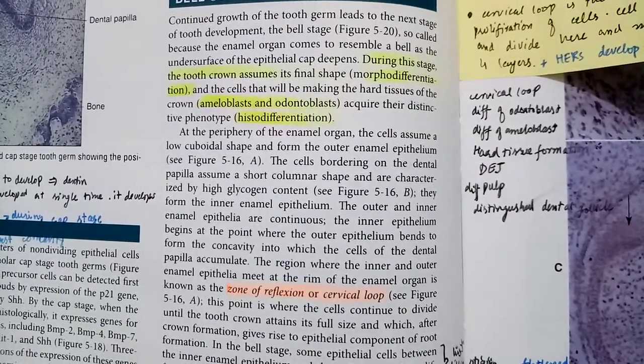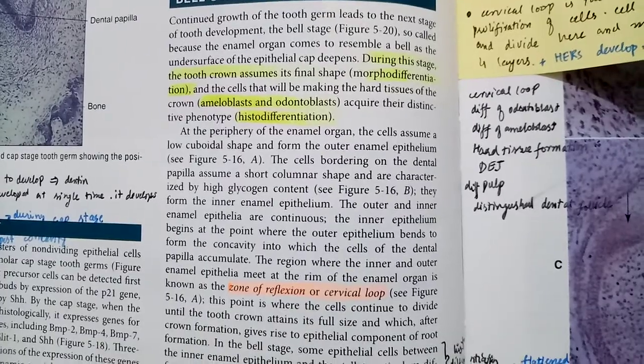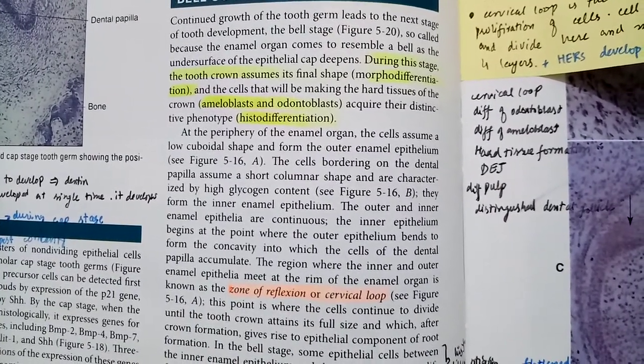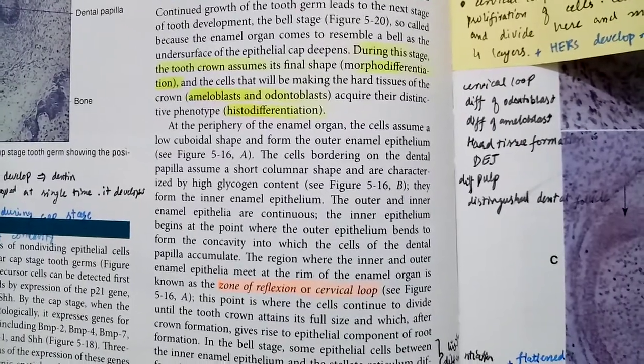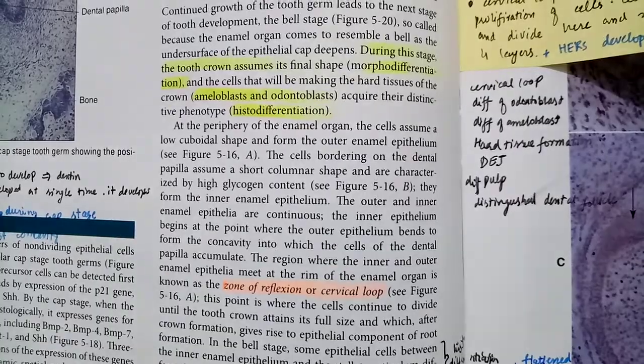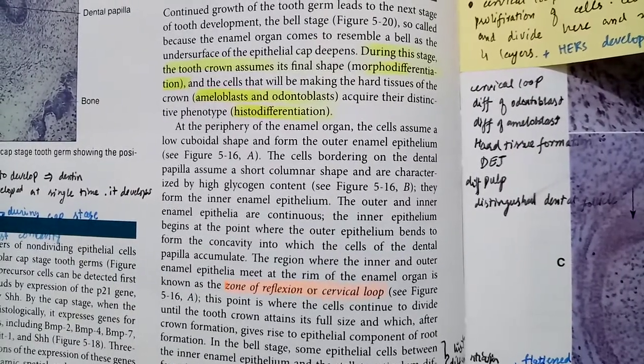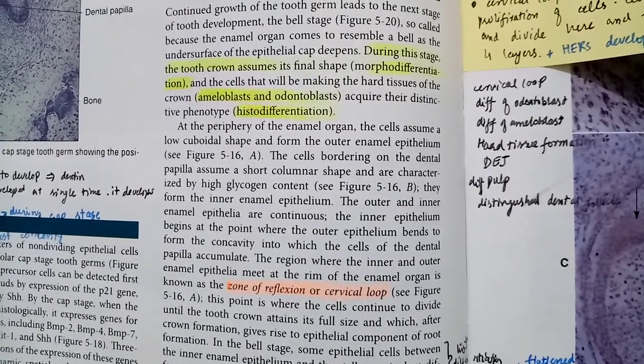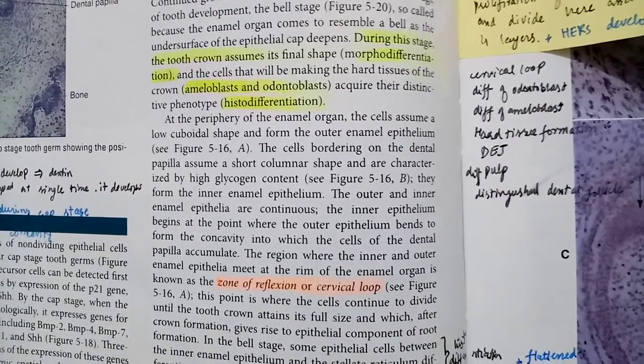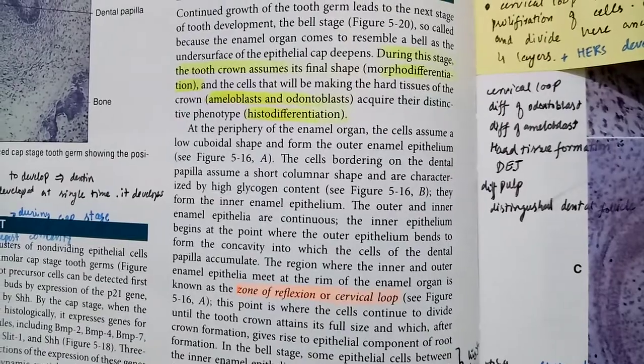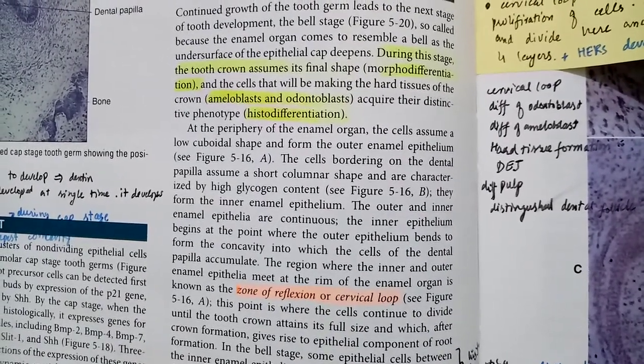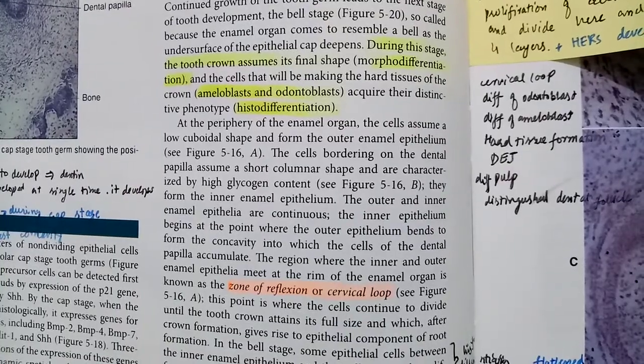The cells that will be making the hard tissues of the crown acquire their distinctive phenotype, and this is histodifferentiation. The cells that the hard tissues are designed to have their distinctive phenotype acquired, in which there are ameloblasts and odontoblasts. Ameloblasts develop the enamel which is the hardest tissue in the human body, and odontoblasts develop the dentine which is a hard tissue.